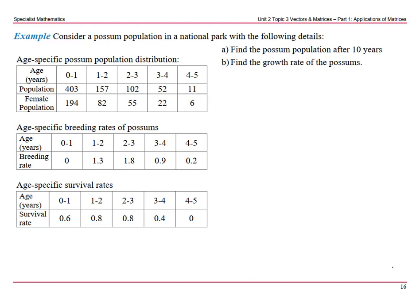Following on from the previous video, let's consider a possum population in a national park with the following details. In these tables we have age-specific possum population distribution, age-specific breeding rates of possums, and age-specific survival rates. We can see that the lifespan of a possum is 5 years, split into 5 groups each of 1 year long.